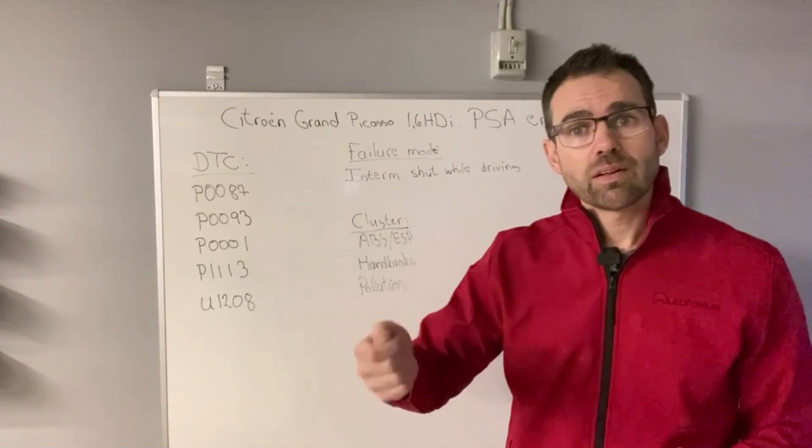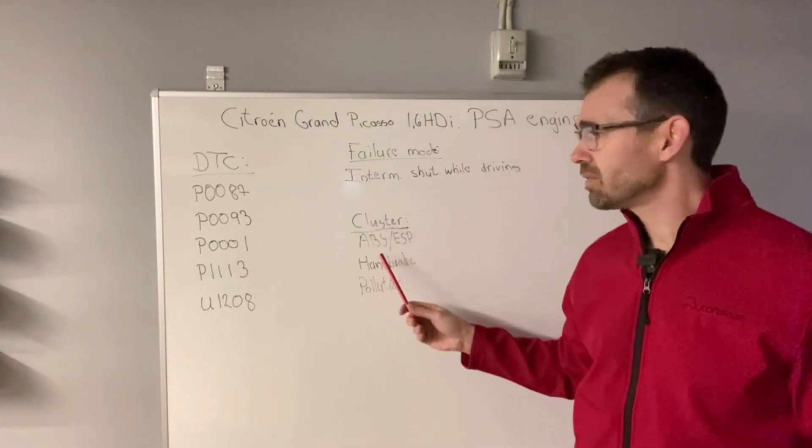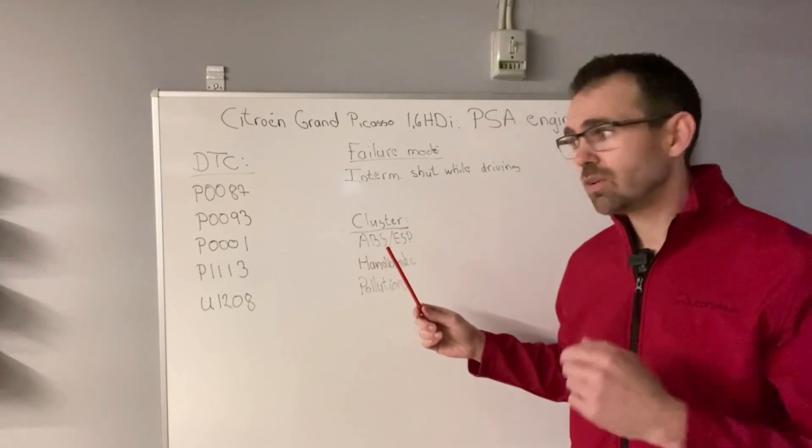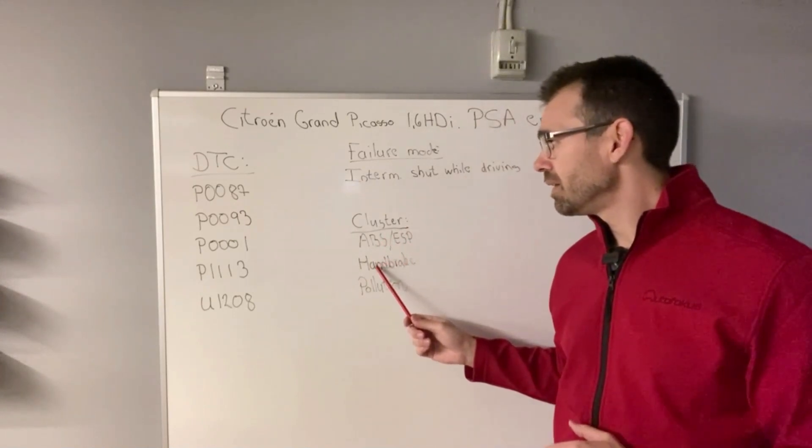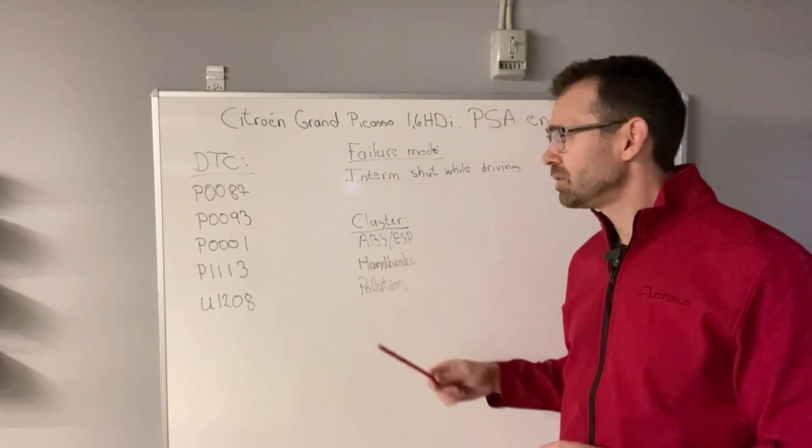When you then turn on the key again, what you will find in the instrument cluster is actually that the ABS/ESP light is now turned on. It shows an error on the handbrake as well and also on the pollution.